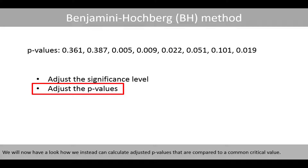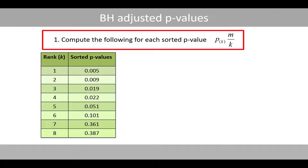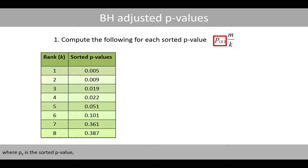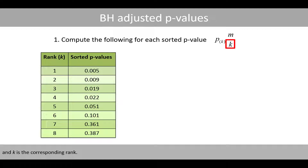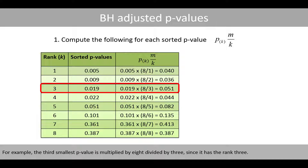We'll now have a look at how we can instead calculate adjusted p-values that are compared to a common critical value. Same as before, we begin by sorting the p-values. Then we compute the following for each sorted p-value, where p sub k is the sorted p-value, m is the total number of p-values, and k is the corresponding rank. Since we have eight p-values, m is equal to eight. Each p-value is therefore multiplied by eight divided by its corresponding rank. For example, the third smallest p-value is multiplied by eight divided by three, since it has rank three.